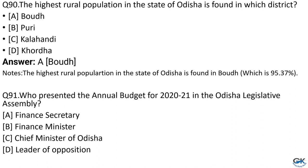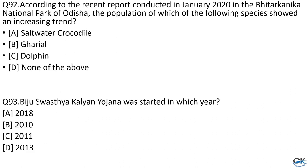Question No. 91: Who presented the annual budget for 2020–21 in the Odisha Legislative Assembly? Option A: Finance Secretary. Option B: Finance Minister. Option C: Chief Minister of Odisha. Option D: Leader of Opposition. The answer is Option B, Finance Minister. Question No. 92: According to a recent report in January 2020 from Bhitarkanika National Park, the population of which species showed an increasing trend? Option A: Saltwater Crocodile. Option B: Gharial. Option C: Dolphin. Option D: None of them. The answer is Option A, Saltwater Crocodile.